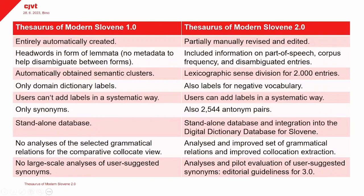Initially we only had dictionary labels for domains, so terminology was labeled but nothing else. We also provided users with the option to add dictionary labels to their own suggestions, and we added roughly 2,500 antonym pairs on top of the synonyms. Importantly, we integrated all this data into the digital dictionary database for Slovene, which means it's now linked with other language data from other resources, and we can also use synonym data in other language resources.